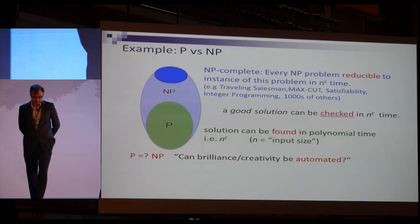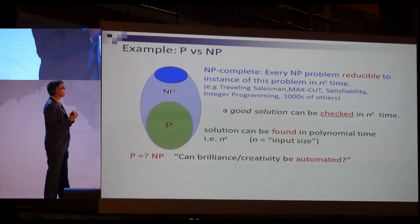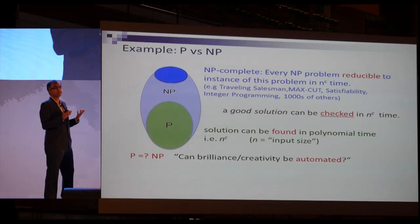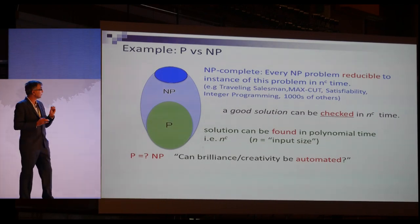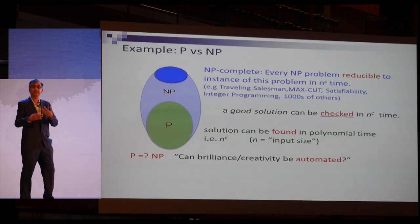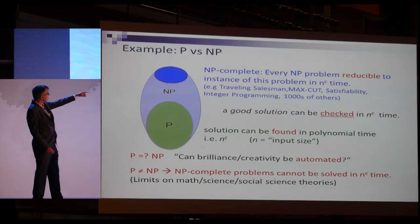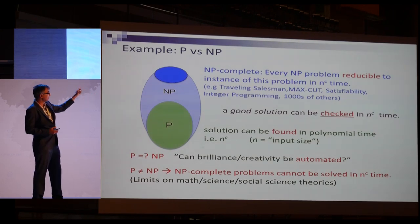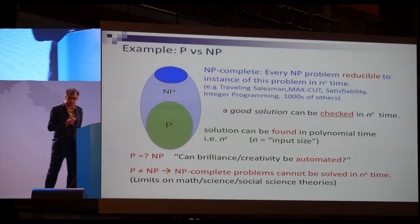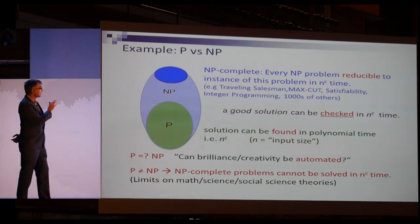The P versus NP question asks intuitively whether brilliance or creativity can be automated. If P equals NP, then you can actually find formal mathematical proofs in time polynomial in the length of the proof. If P does not equal NP, which is what most people believe, then NP-complete problems cannot be solved in polynomial time — because every NP problem reduces to an NP-complete problem, if one could be solved in polynomial time, P would equal NP.